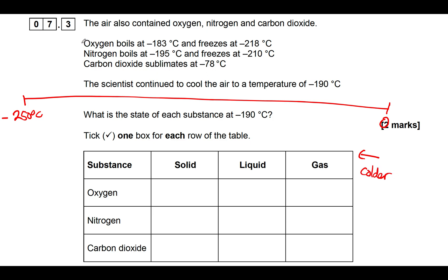The first gas is oxygen. It boils at minus 183°C, so I'll make a mark here — minus 183 — that is the boiling point of oxygen. That's also the temperature at which, if we go colder than that, it will condense into a liquid. And then it freezes at minus 218°C, so that's the freezing point of O2.